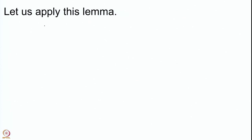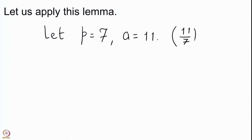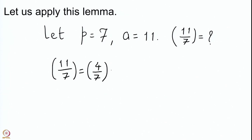Suppose p is 7 and we want to compute the Legendre symbol for a equal to 11. We are asking for the Legendre symbol (11/7). Now, when you go modulo 7, 11 is 4. So (11/7) is nothing but (4/7), and we know that 4 is the square of 2, so this equals 1. But let us also verify this using Gauss Lemma.